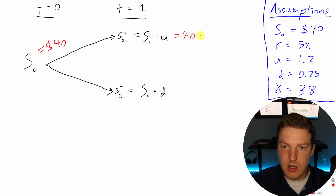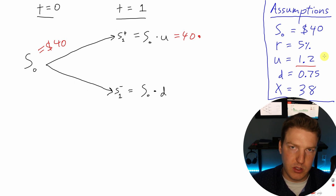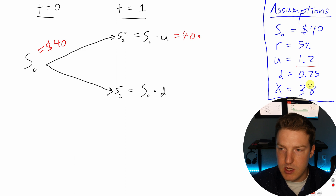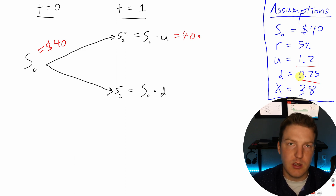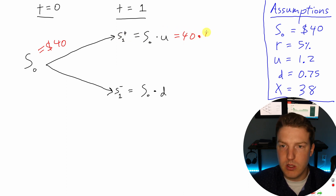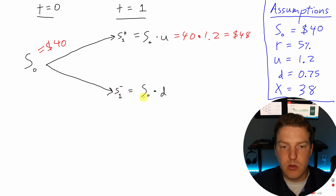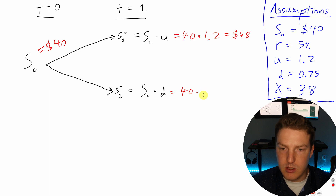S1+ equals 40 times 1.2, which is $48. The up factor is 1.2 and the down factor D is 0.75 — these are given for exam purposes, but in real life you'd derive them from the stock's volatility. S1- equals S0 times D, which is 40 times 0.75, giving us $30.